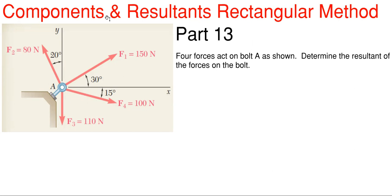We have four forces that act on bolt A, and we need to determine the resultant of all the forces on this bolt. We're going to use the rectangular method, which can also be known as the triangular rule. This method is the best overall, but definitely best when you have more than two forces to find the resultant between.